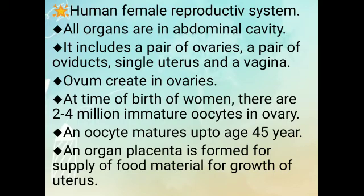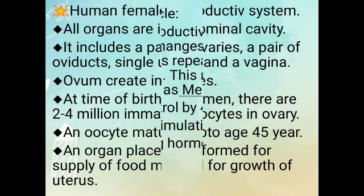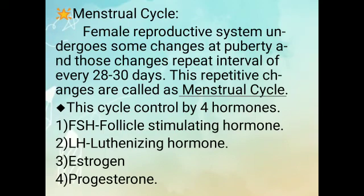Ovum is created in the ovaries. At the time of birth of a woman, there are 2 to 4 million immature oocytes in the ovary. An oocyte matures up to the age of 45 years. An organ called placenta is formed for the supply of food material for the growth of the fetus in the uterus. The female reproductive system undergoes some changes at puberty, and those changes repeat at an interval of every 20 to 30 days. These repetitive changes are called the menstrual cycle.